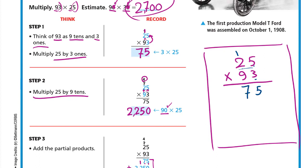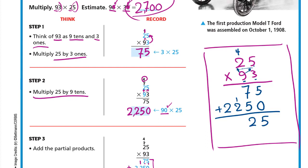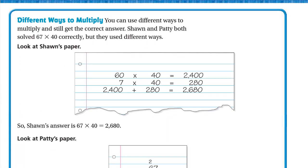In the second step, erase the carry and put 0 here, because we're multiplying by 9 which is actually 90. 9 times 5 is 45 — write 5 down and carry 4 up. Then 9 times 2 is 18, plus 4 is 22. Finally add: 5 plus 0 is 5; 7 plus 5 is 12 — write 2 down and carry 1; 1 plus 2 is 3, and write 2. Answer: 2,325. The more you practice, the faster you'll solve it.